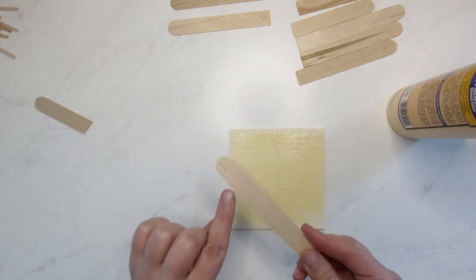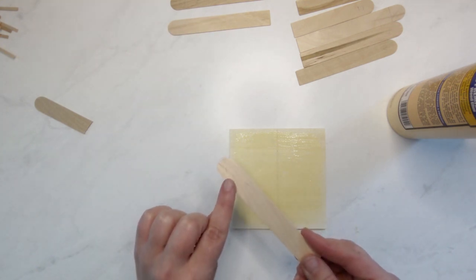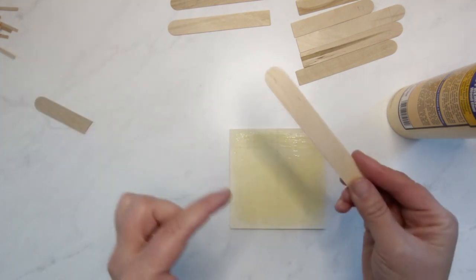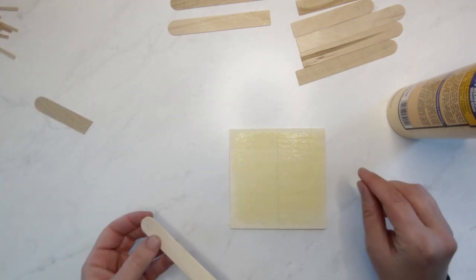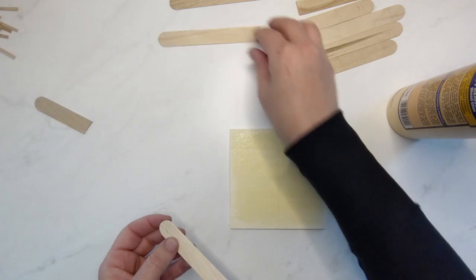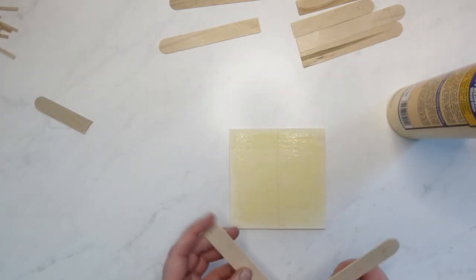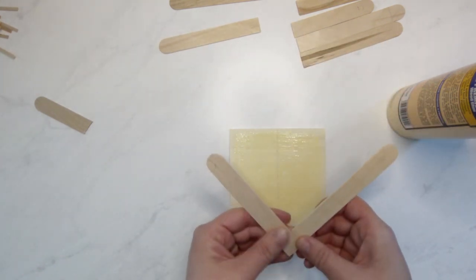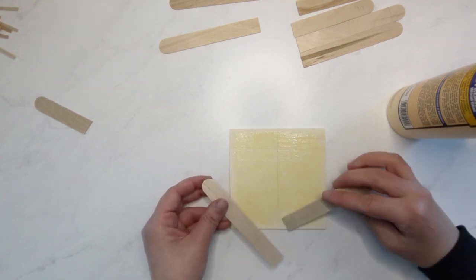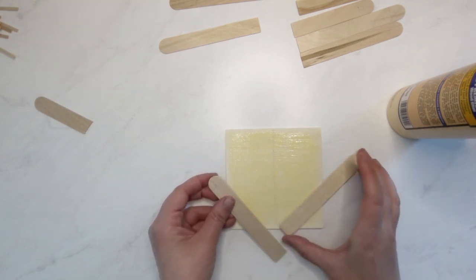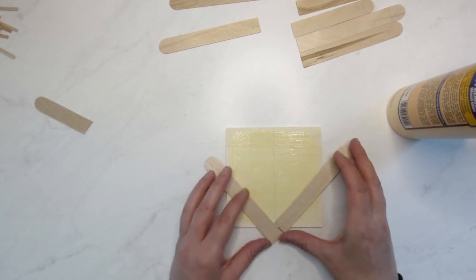So you are going to want to, after you dry fit, number these so that you know exactly what order that you had them in. Because you'll think you remember but you won't really remember. Basically I just start by creating this little V and I know I need this V to be meeting right on the center line.